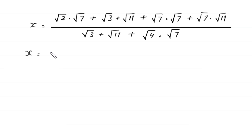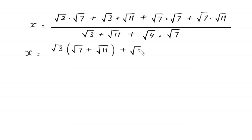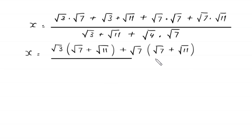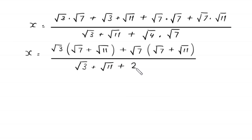Next, x equals: from the first two terms we factor out square root of 3 as a common factor, leaving bracket square root of 7 plus square root of 11. From the next two terms we factor out square root of 7 as a common factor, leaving bracket square root of 7 plus square root of 11. The denominator is square root of 3 plus square root of 11 plus square root of 4 is 2 times square root of 7.